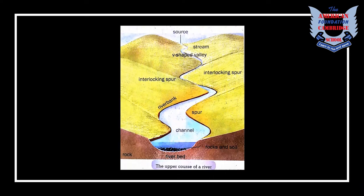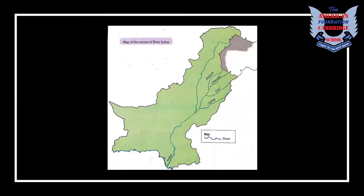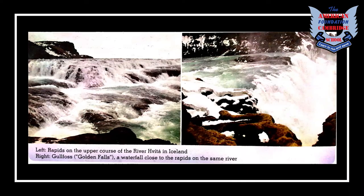An example is the tiny spring in the Pennines mountains in England, which is the source of the South Tyne — a tributary of the River Tyne, one of the longest rivers in England. In this picture you can see rapids on the upper course of the river Hvítá in Iceland, and on the right side, Gullfoss — a waterfall close to those rapids on the same river. There is also a picture of the River Allen in northeast England, a tributary of the South Tyne.